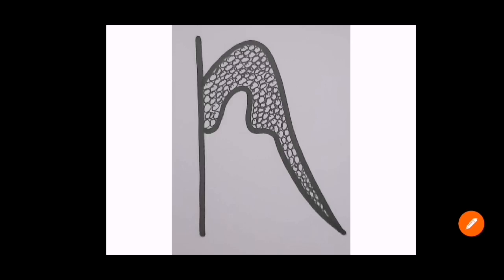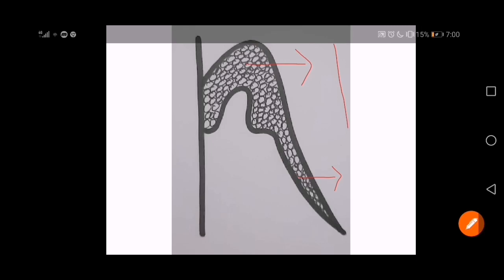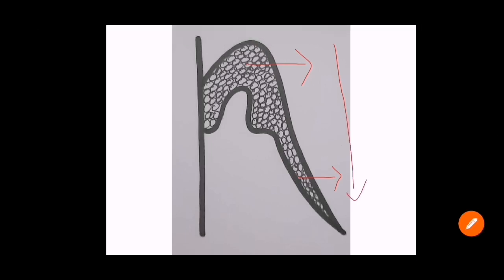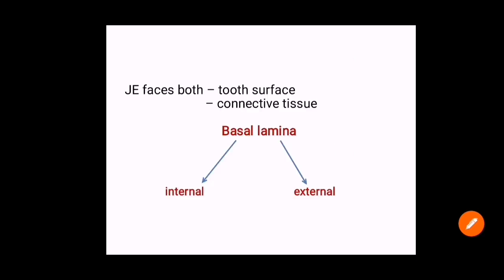This is how you always draw junctional epithelium: coronally it is more wide because it has more cells — 10 to 29 cell layers — whereas apically it is tapered with just one or two cell layers. The total length is 0.25 to 1.35 mm. Junctional epithelium is special because it faces both the tooth surface and the connective tissue.